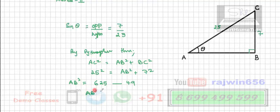So AB square is equal to, if I subtract this, I am going to get 576. Square root of this will give me square root of 576 is 24. So this side is going to become 24.